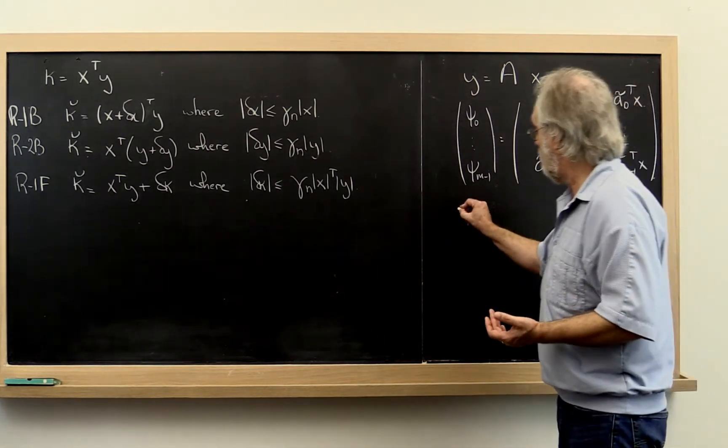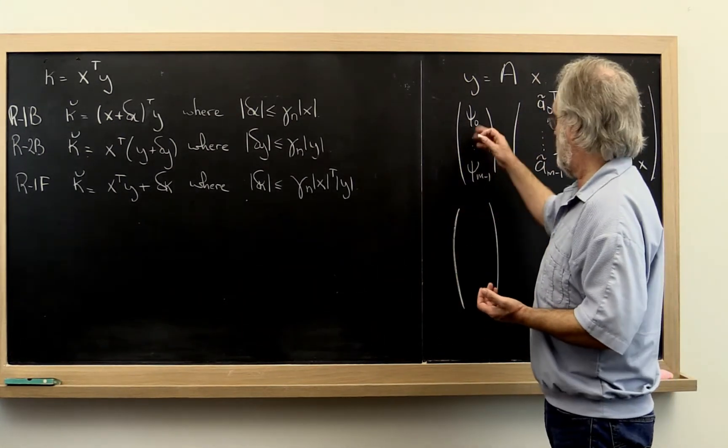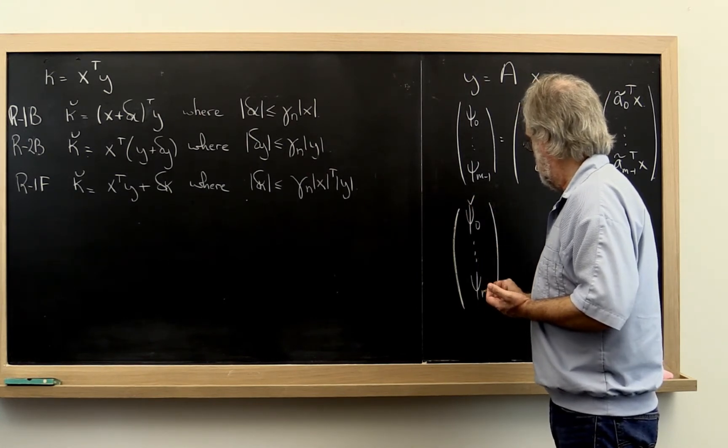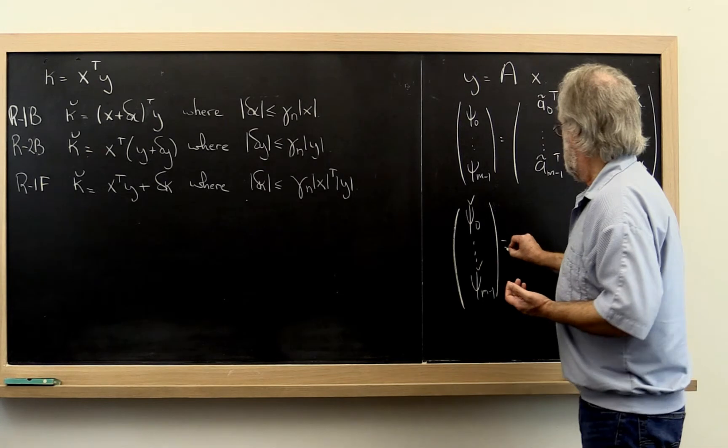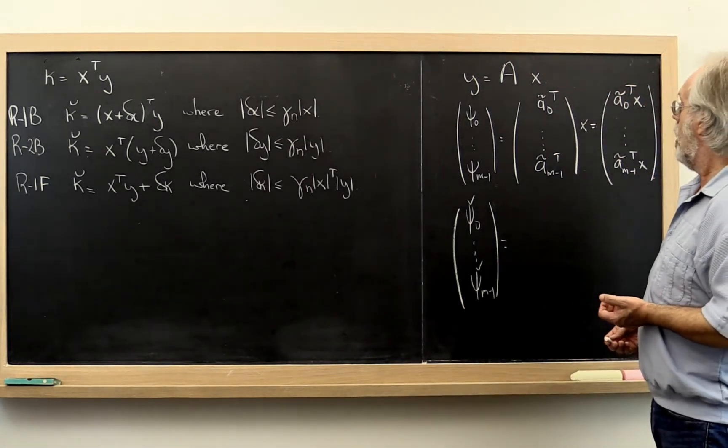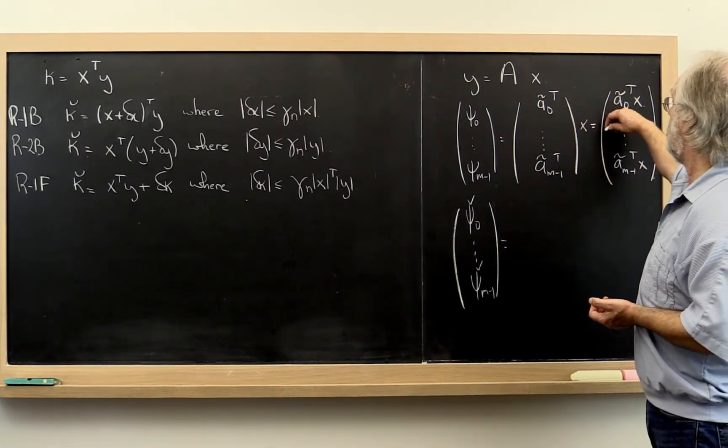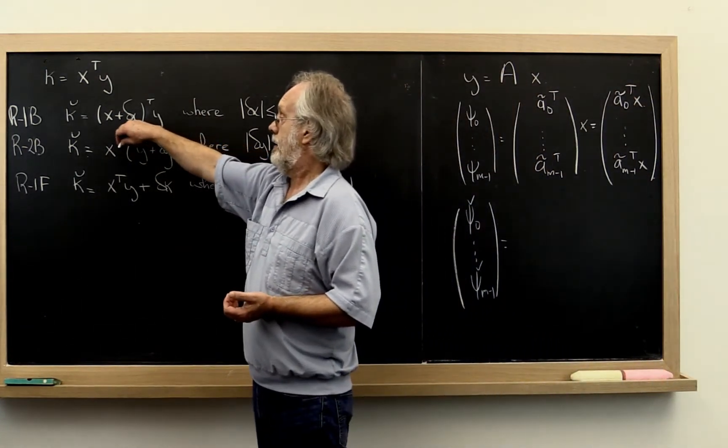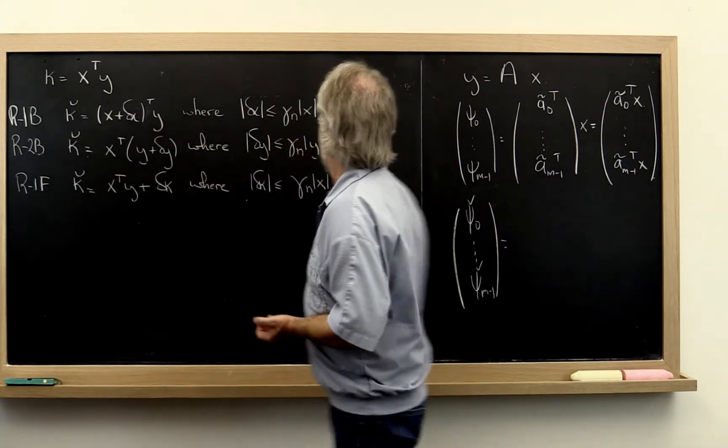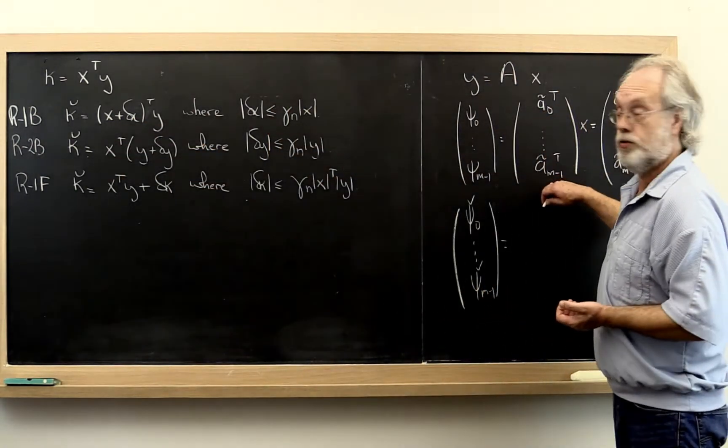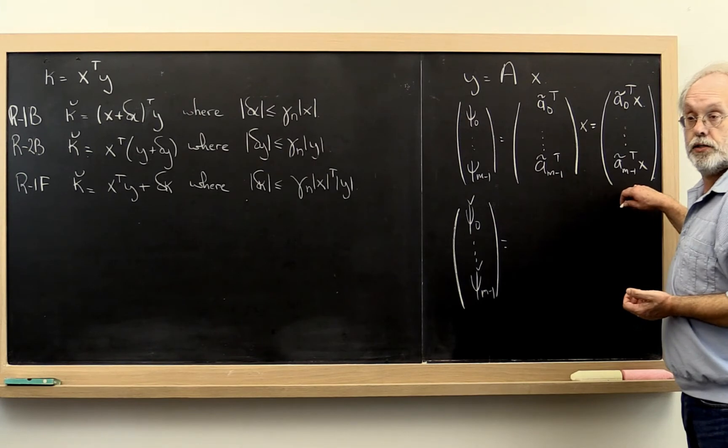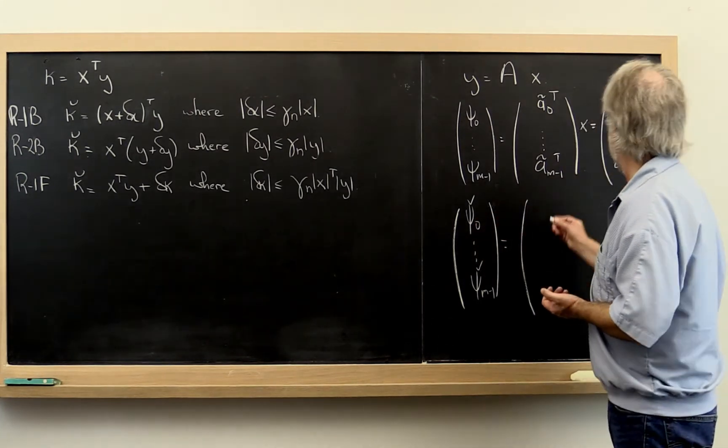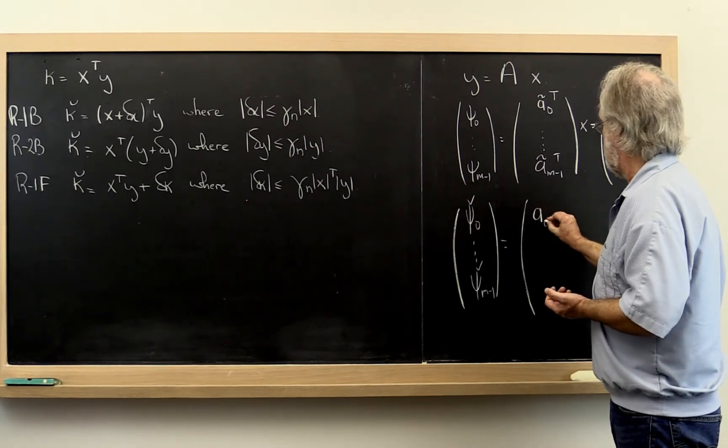Now, what we notice then is that the computed entries in y are equal to, for each of these dot products what we can do is add a perturbed row to each of the rows when doing the dot product. So this particular result of a dot product is just the result of the slightly changed vector, row vector,